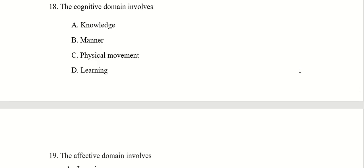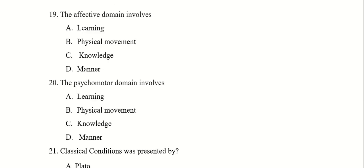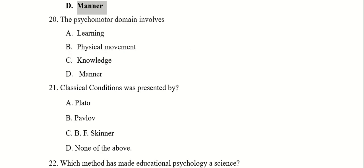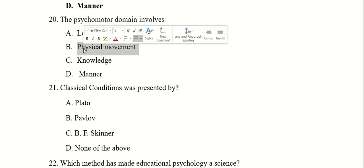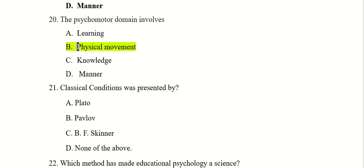The cognitive domain involves knowledge, manner, physical movement or learning. Right answer you have is knowledge. The affective domain involves learning, physical movement, knowledge or manner. Right answer you have is manner. The psychomotor domain involves learning, physical movement, knowledge or manner. Psychomotor domain involves physical movement.